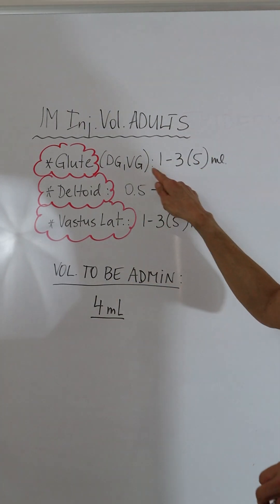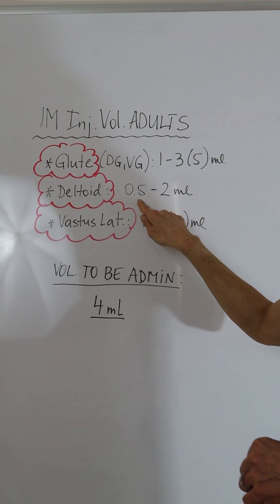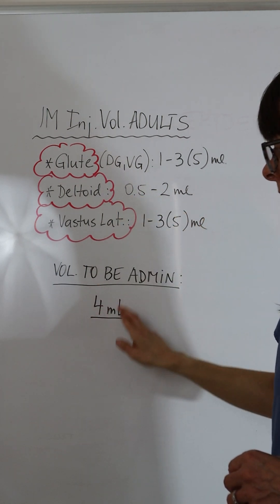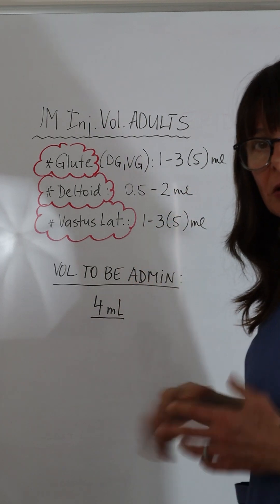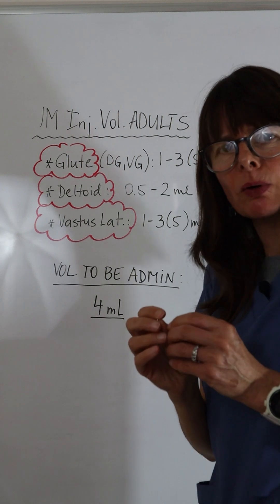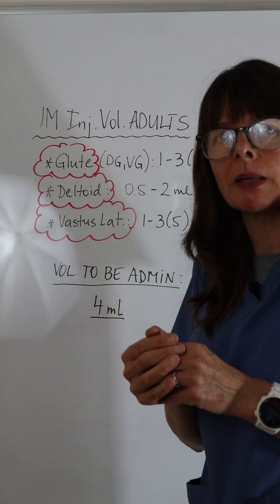The recommendation is for the glute one to three milliliters or a deltoid 0.5 to two milliliters. So with the four milliliters, I would not inject all the way into one muscle because this patient is a normal size and I would be afraid that the five milliliters would be a little bit too much.